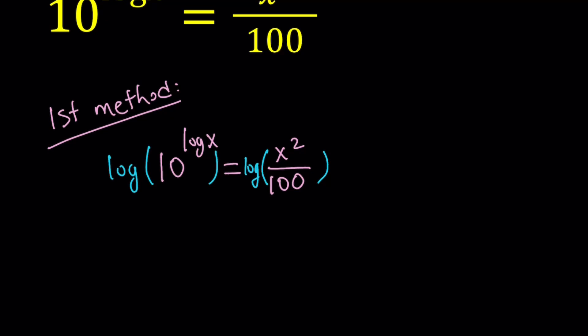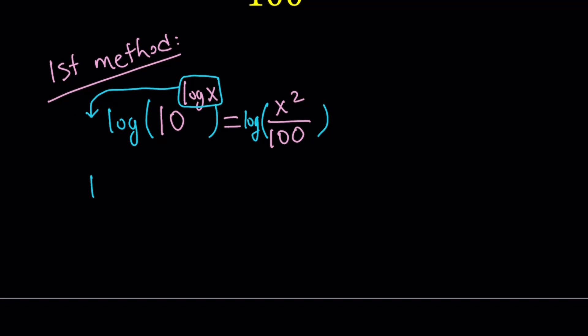And then what's going to happen on the left hand side, we have an exponent, so we can go ahead and move it to the front. That's what's cool about logging something that has an exponent, because it's just going to bring it down. So it's going to give us log x times log 10 equals. Now on the right hand side, we have the log of a quotient, so we can write it as the difference of two logs. Log x squared minus log 100.